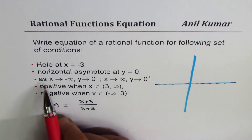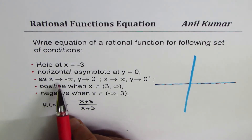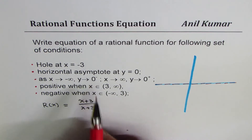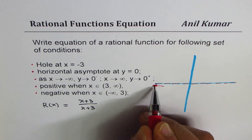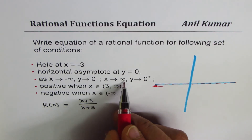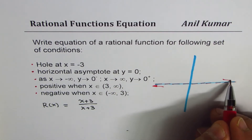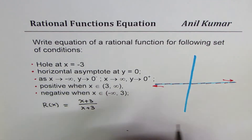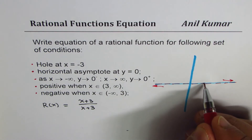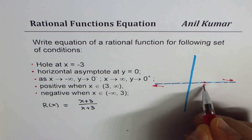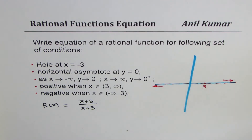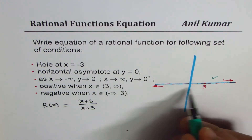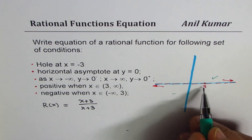Here is the horizontal asymptote, so the end behavior is: as x approaches negative infinity, y approaches 0 from below, meaning we are approaching from this side. As x approaches positive infinity, y approaches 0 from above. That's the end behavior. The function is positive when x belongs to 3 to infinity, and on this side — all the way to negative infinity from 3 — it is negative.